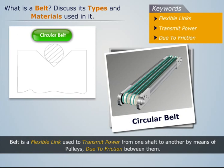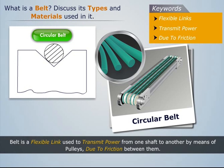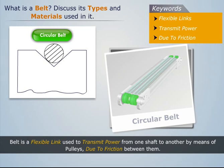Circular belt: Its cross-section is circular, like that of a rope, and is mostly used in factories and workshops to transmit a large amount of power from one pulley to another, where the pulleys are at least eight meters apart.